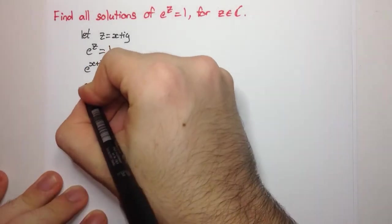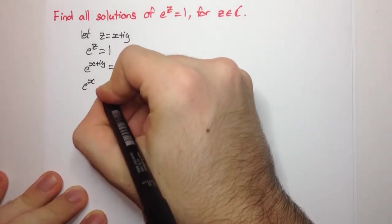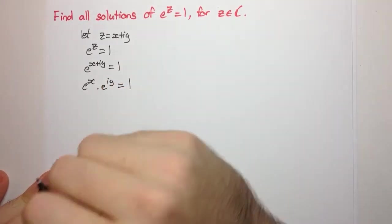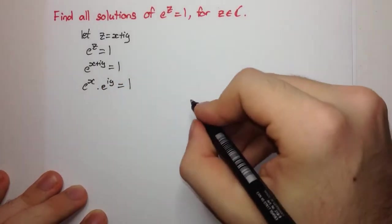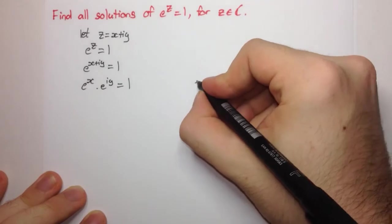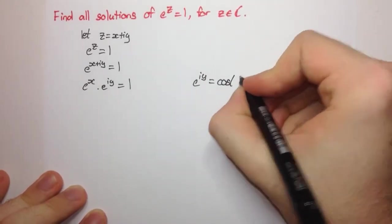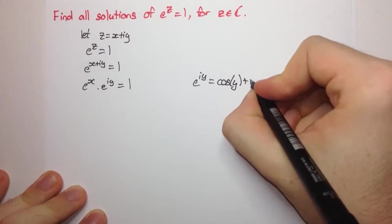We can break this up using our index laws, and it becomes e to the x multiplied by e to the iy equals 1. And now we can apply Euler's formula, which says that e to the iy equals cos of y plus i sine y.